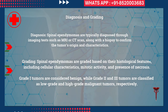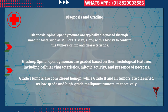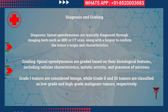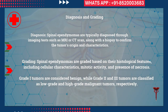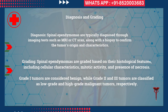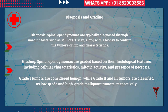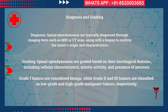Spinal ependymomas are graded based on their histological features, including cellular characteristics, mitotic activity, and presence of necrosis. Grade 1 tumors are considered benign, while grade 2 and grade 3 tumors are classified as low-grade and high-grade malignant tumors respectively.